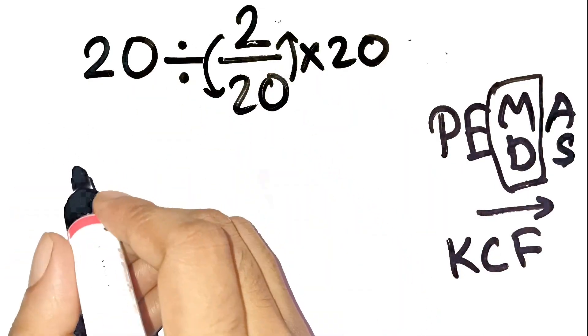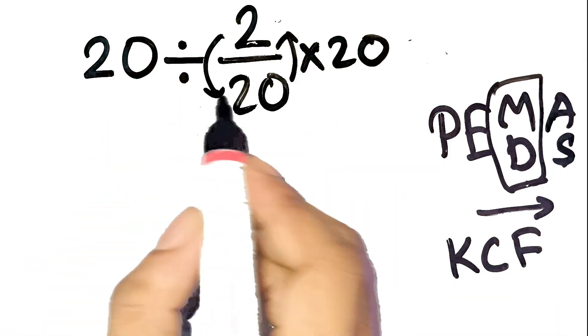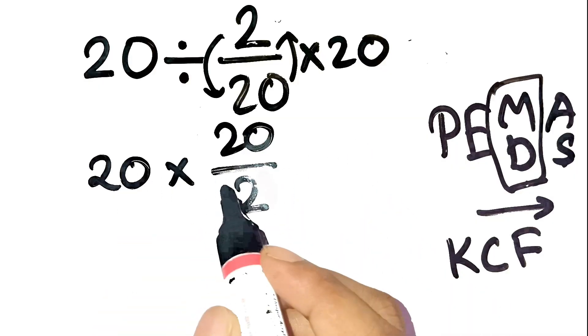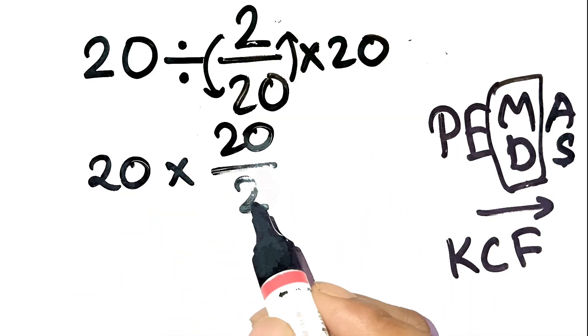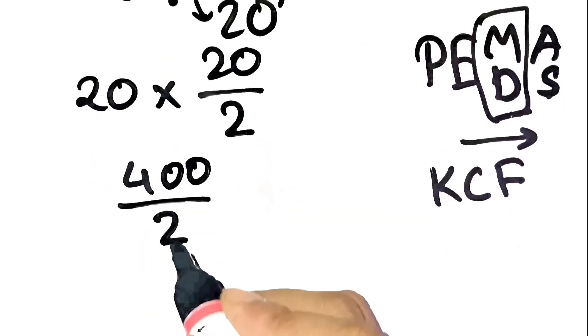Step by step: Start with 20 divided by 2 over 20. Using keep-change-flip, that becomes 20 times 20 over 2. Simplify 20 times 20 over 2. Multiply 20 by 20 to get 400. Then divide by 2 to get 200.